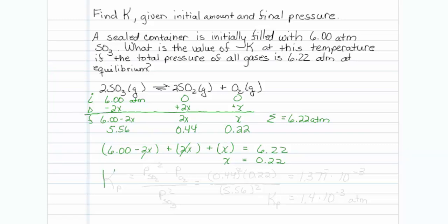Now I will do my equilibrium expression, and apparently this one is going to be done in pressure, so that will be pressure of SO2 squared times the pressure of O2 to the first power over pressure of SO3 squared.